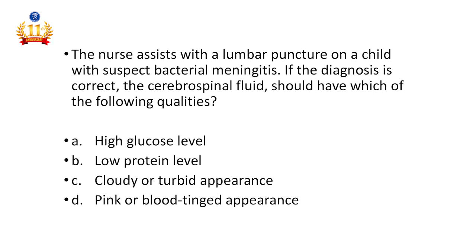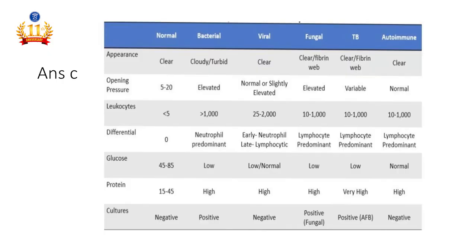Ninth question: The nurse assists with a lumbar puncture on a child with suspected bacterial meningitis. If the diagnosis is correct, the cerebrospinal fluid should have which of the following qualities? High glucose level, low protein level, cloudy or turbid appearance, or pink/blood-tinged appearance. The answer is cloudy or turbid appearance. In bacterial meningitis we see a cloudy CSF, in viral meningitis the CSF is clear, and blood-tinged CSF suggests subarachnoid hemorrhage.